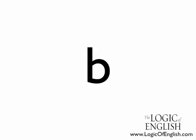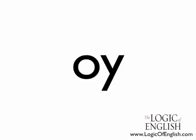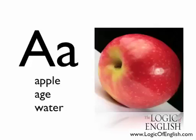This is a picture of the sound B. This is a picture of the sound OI. Notice OI is written with two letters. Because English has 44 sounds and only 26 written letters, many of the phonograms are written with more than one letter. These are called multiletter phonograms.